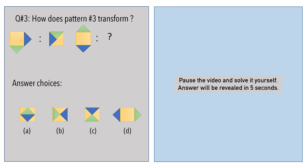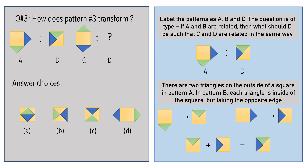Third question: if pattern 1 and 2 are related, find the missing pattern that relates to pattern 3. Pause the video and solve it. In pattern A, there is a green triangle and a blue triangle on the outside of a yellow square. The green triangle moves inside the square, taking the opposite edge of the square.